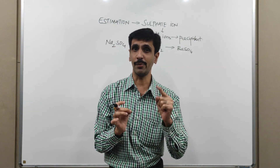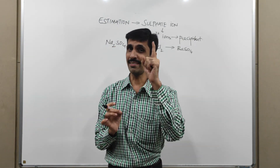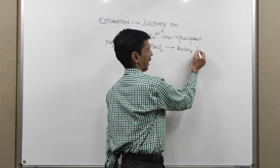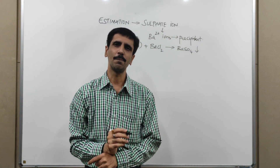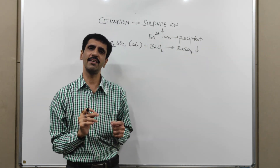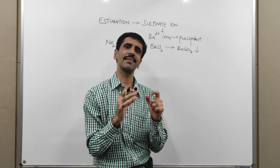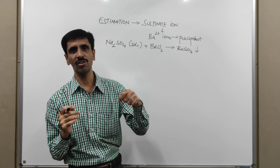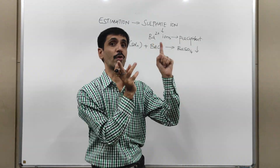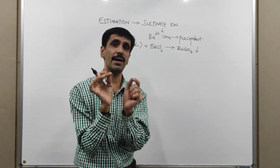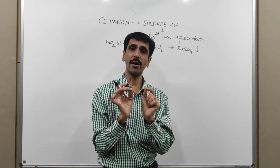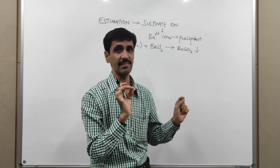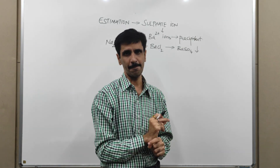A solid in the presence of a liquid is heavier, and because it is heavier, it is going to settle down. So, initially we have sulfate ions in the form of a solution. Through the addition of barium ions, the sulfate ions are converted into a precipitate. It is the barium ions which are responsible for the formation of a precipitate, and hence we say that the role of barium ions is as a precipitant.